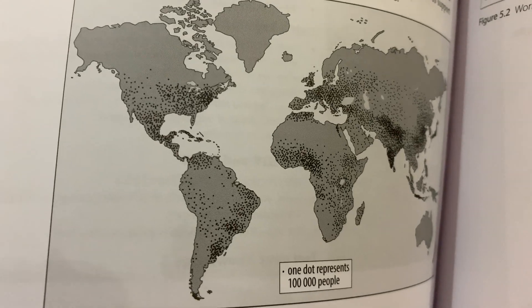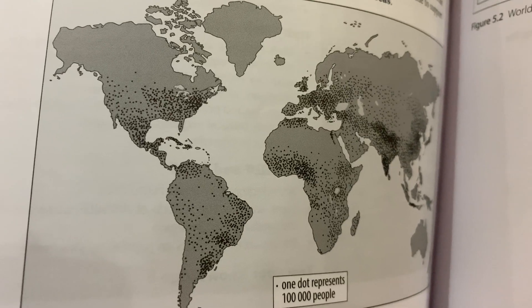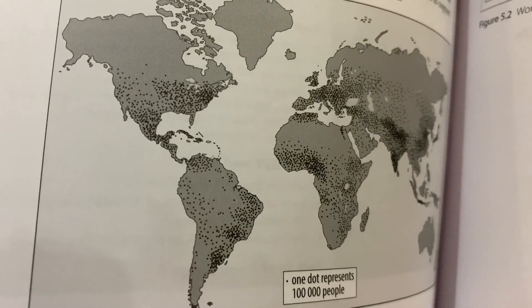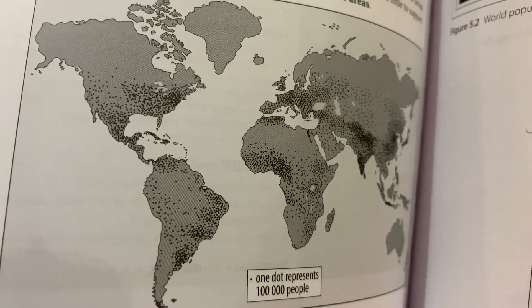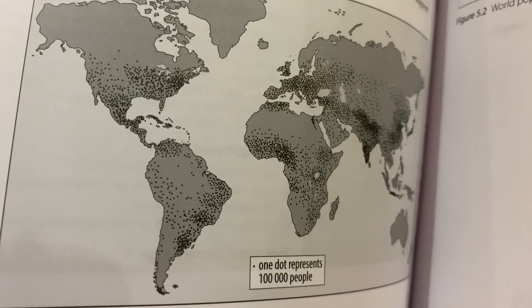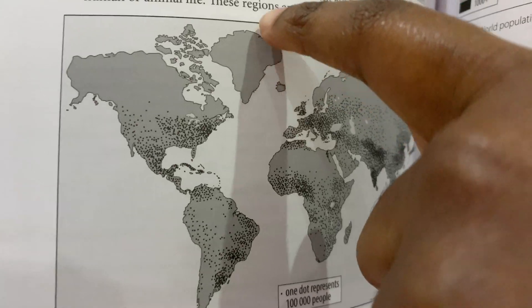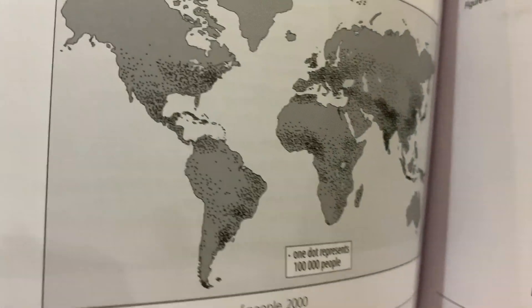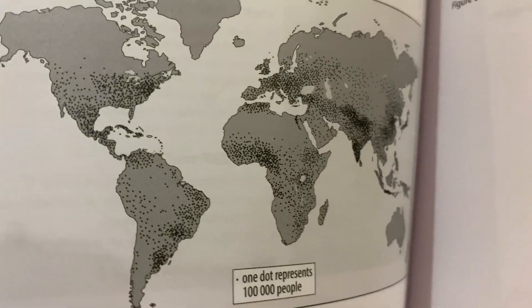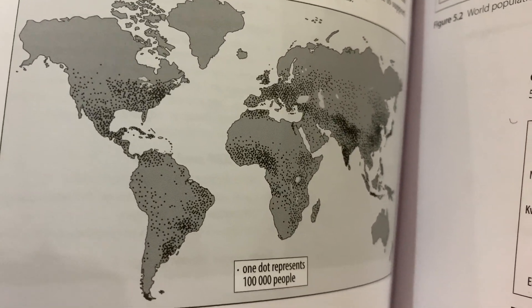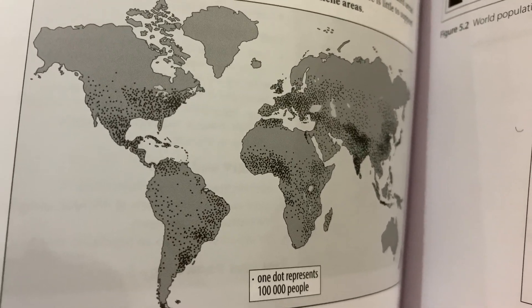As you move away from those areas, there are areas that aren't as densely populated — you call those non-ecumene areas. There the climate is harsh. For example, in Greenland there's literally one dot for the whole place, because the climate is very cold and not a lot of stuff grows there, so not a lot of people live there.